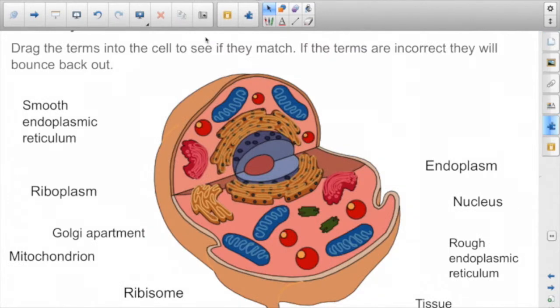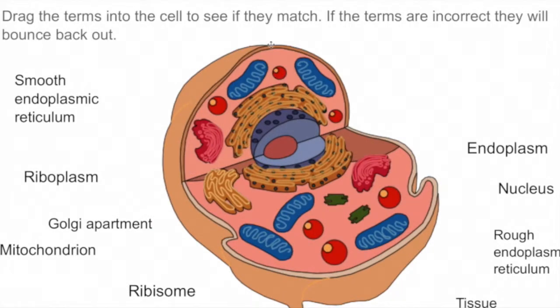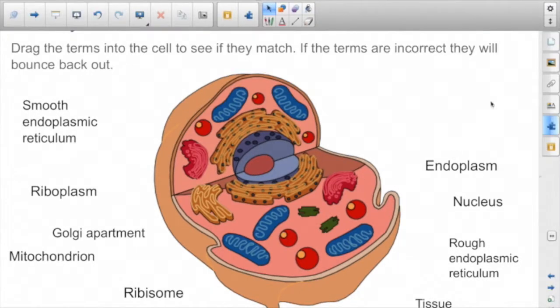Here's another one that I found. So you drag the terms in. If they are part of a cell, you're not necessarily matching them up to a specific part of the cell, just if they are actual terms that go with cells you put them in. If not, then they don't. And if you put it in incorrectly it'll bounce back, so that one's not.